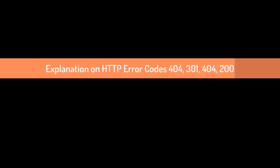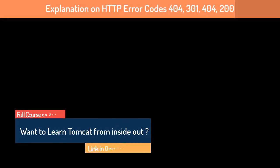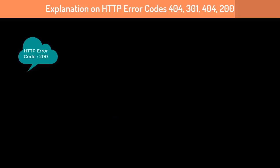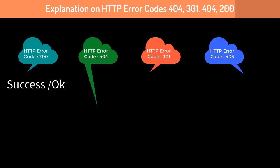You could also be asked to explain HTTP error codes: 200, 404, 301, 403, and 500. The 200 response code means everything is okay. The 404 code means page not found — if the resource at the requested URL is not found, the server returns 404.